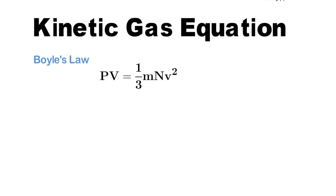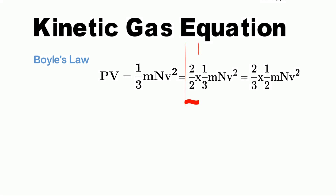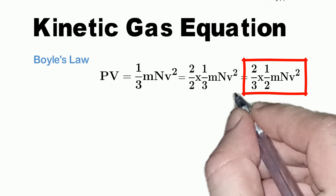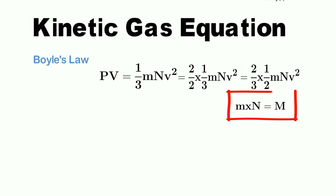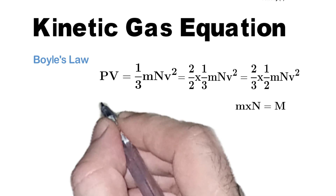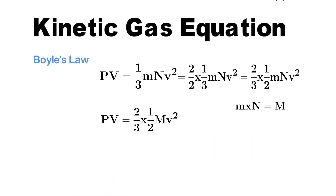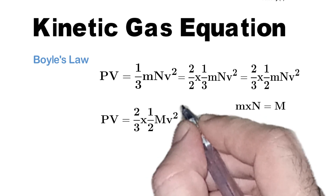For deriving Boyle's law, let's multiply and divide the right-hand side of the equation by 2. Multiplying and dividing by 2, we will get 2/3 into (1/2)mnV², where m represents the mass of the molecule and n represents the total number of molecules. If we multiply the total number of molecules by the mass of the molecule, we will get the mass of the total gas, which is denoted by capital M. So, mass of the gas M equals m multiplied by n. Substituting mn as M, we get 2/3 × (1/2)MV².